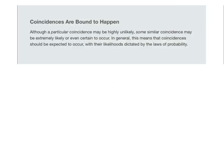The truth can be stated this way: coincidences are bound to happen. Although a particular coincidence — like you winning — may be highly unlikely, some similar coincidence may be extremely likely or even certain to occur. In general, this means that coincidences should be expected to occur with their likelihoods dictated by the laws of probability.